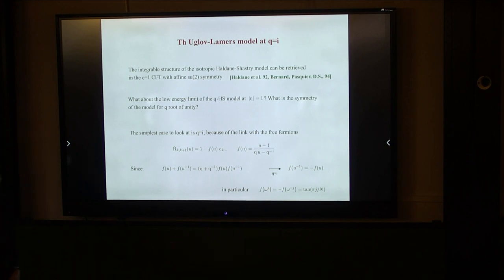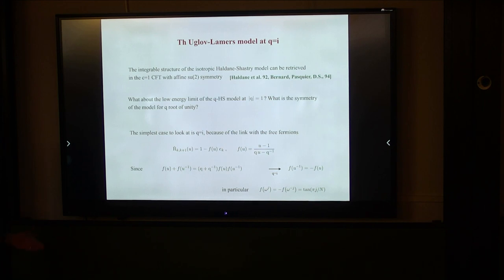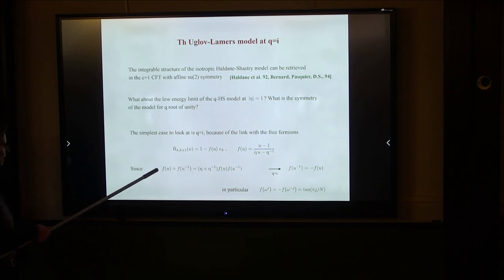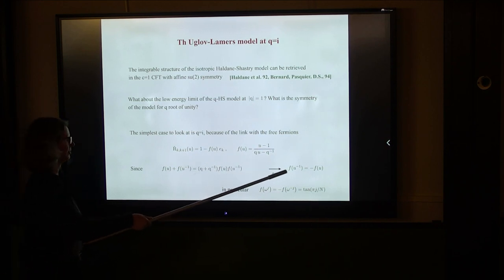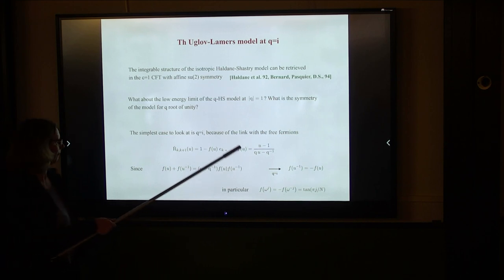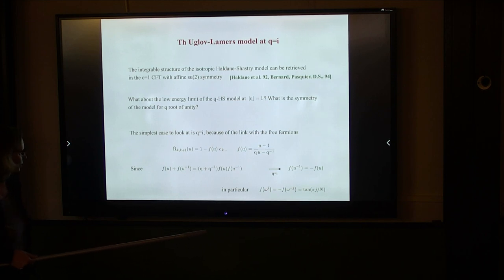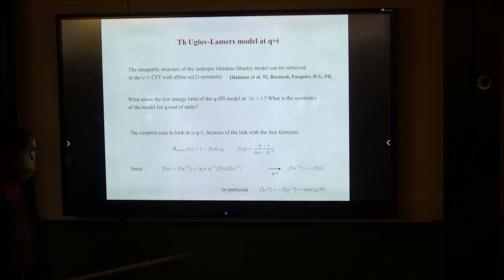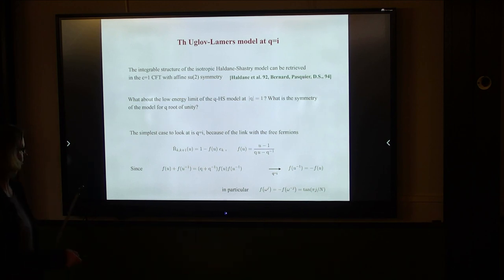The most natural thing is to look at Q equals i — the fermionic point — because we know that XXZ is relatively simple to solve there. The R-check matrix depends on the function F(u). For Q equal i, this becomes just the tangent of log(u), so F evaluated at position ω^j gives the tangent of πj/N. The e_k's here are the Temperley-Lieb generators whose square is proportional to delta.